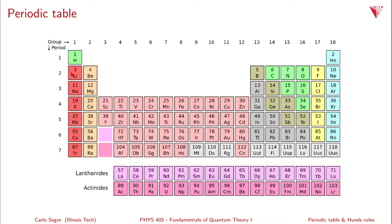For lithium, we've filled up the 1s state and now go to the 2s state, which is n=2, l=0, m=0. Lithium has 3 electrons and beryllium has a fourth electron in a spin-up/spin-down configuration, filling the 2s states. With n=2, you can also have l=1, which is the p state, giving a multiplicity of 6.